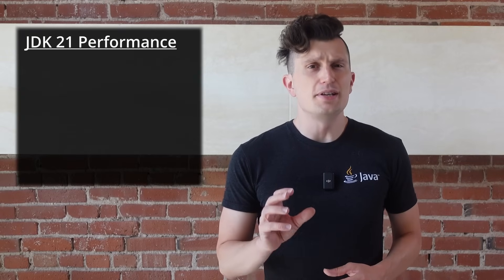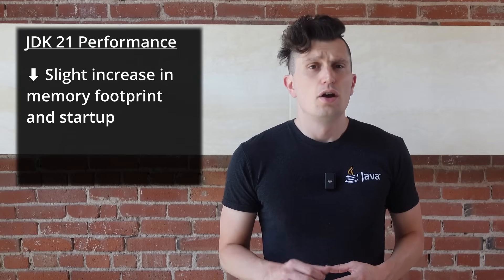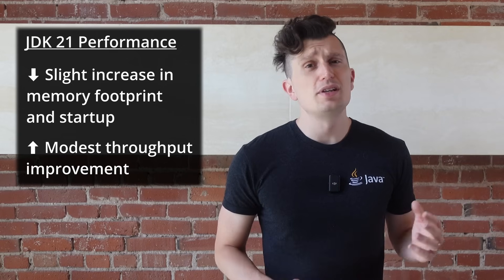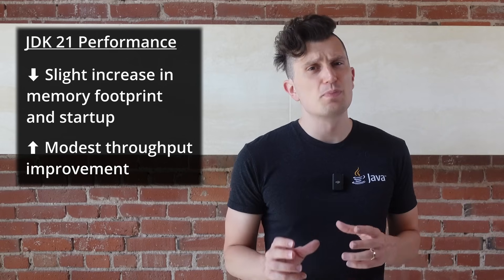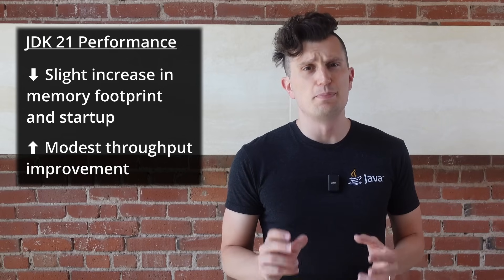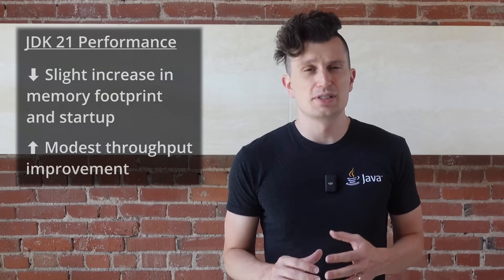It does look like there might be small regressions in footprint and startup, though on the other hand, throughput does look a bit better as measured by the SPECjbb 2015 benchmark, with gains between 5 and 15 percent. From my own testing on a 2019 MacBook Pro using a simple Spring Boot application, the performance comparisons between 17 and 21 track with a slightly larger footprint and slightly slower startup, though I didn't have a great way of measuring throughput.